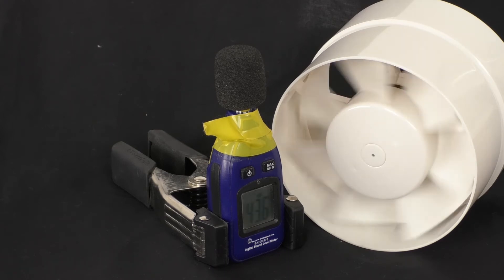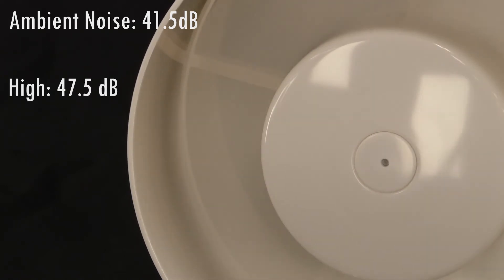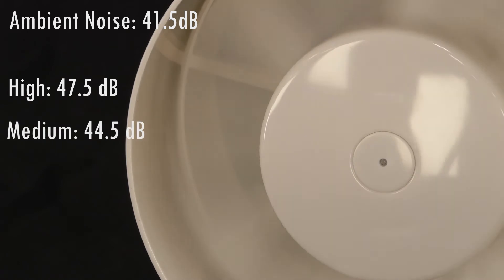This means that when the fan was running on its own, the high setting was 47.5 decibels, which was only 6.5 decibels higher than the ambient noise. On the medium setting, the noise level was raised only by 3 decibels. And on the lowest setting, there was only an increase of 2 decibels.